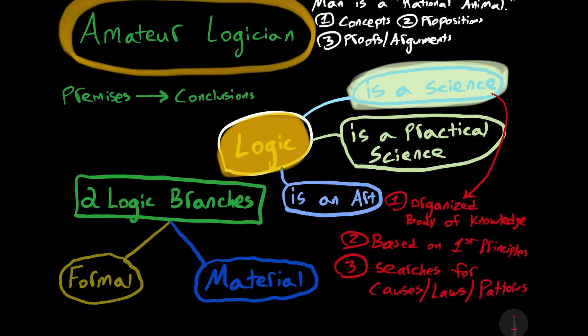And traditional logic meets all three. It's an organized body of knowledge about concepts, propositions, and arguments like syllogisms. It's based on first principles like the principle of non-contradiction, namely something cannot both be and not be in the same respect, manner, and time.